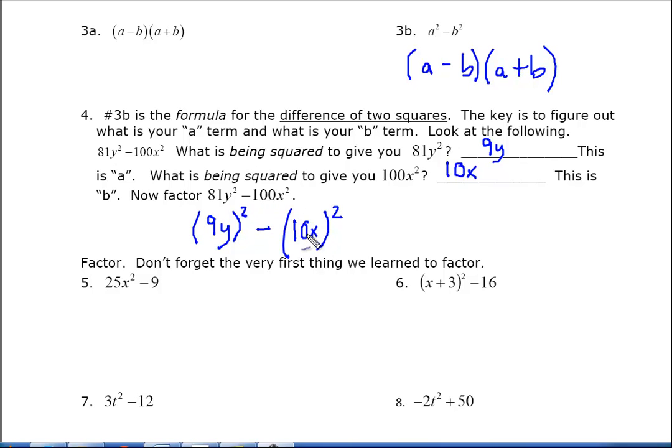So we can use the formula that we've discovered up here, and just pop it in. So your a is 9y minus your 10x, and then a plus b would be 9y plus 10x.